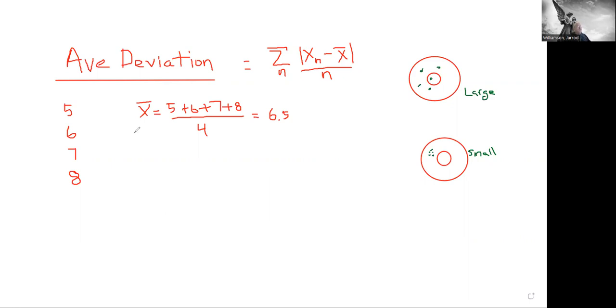First to calculate average deviation, I have to calculate the average. So I take the 5, 6, 7, and 8, I add them up, I divide by the number of measurements, which is 4, and that gives me an average of 6.5.